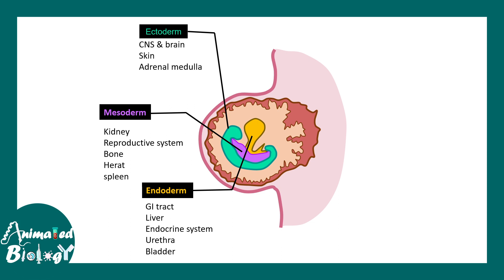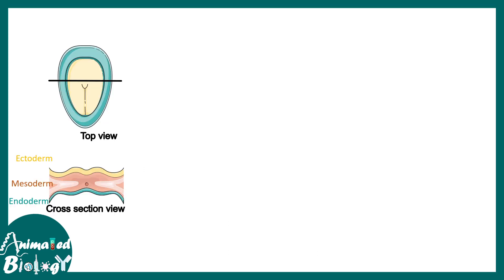Gastrulation is the first milestone that has to be achieved during the process of development. Eventually, there will be many modifications and influences from inside and outside environments.